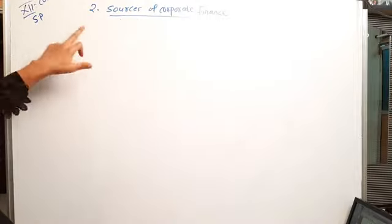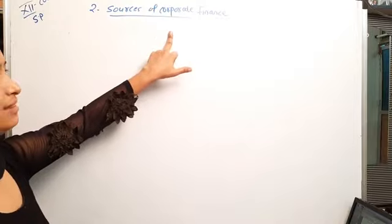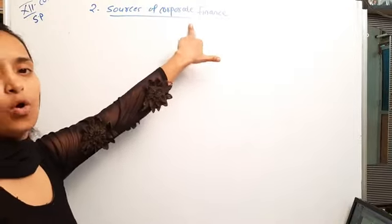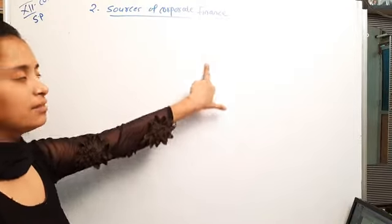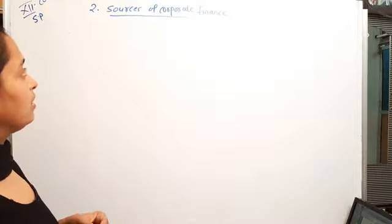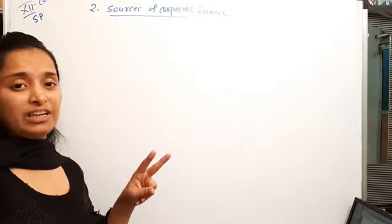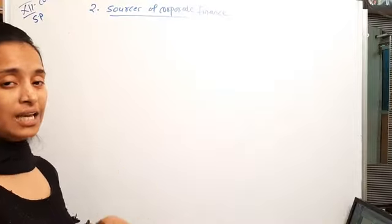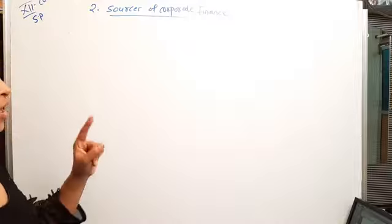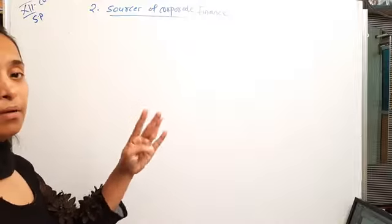Good morning, kids. Welcome to the second lesson. We can say sources of corporate finance. From the first lecture, we have seen preference shares and equity shares. From preference shareholders, types include cumulative, non-cumulative, and redeemable.